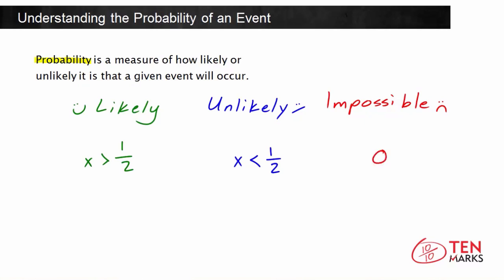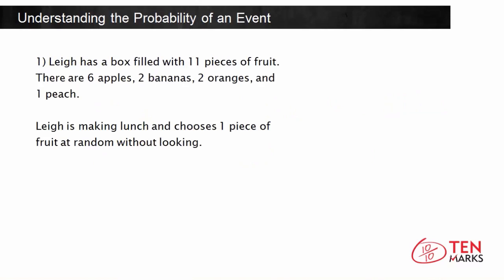So now let's practice by solving a problem together. Lee has a box filled with 11 pieces of fruit. There are six apples, two bananas, two oranges, and one peach.